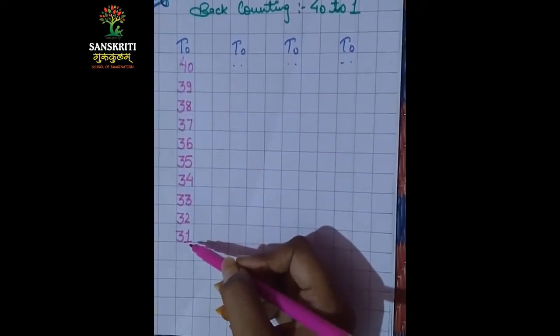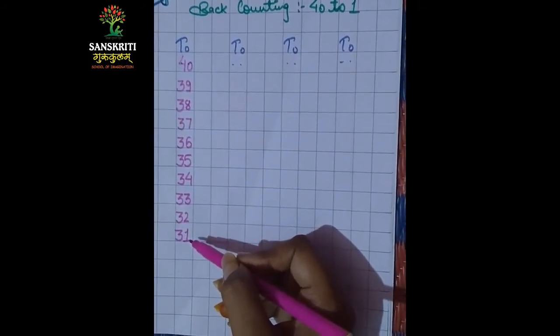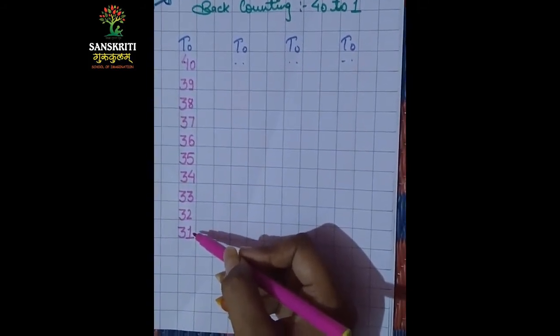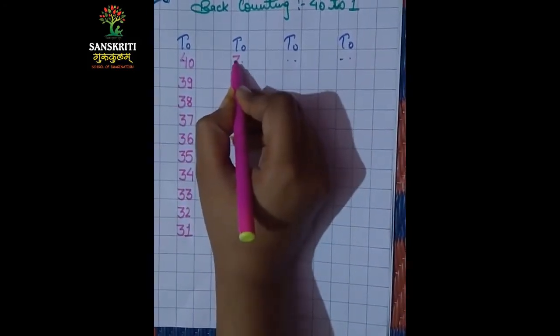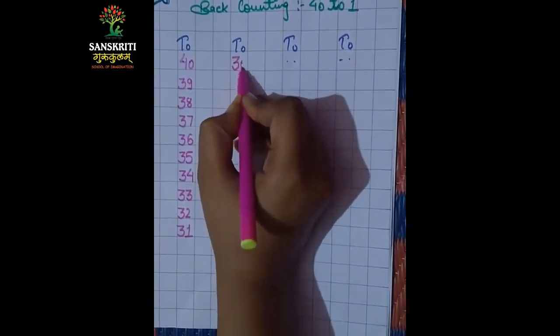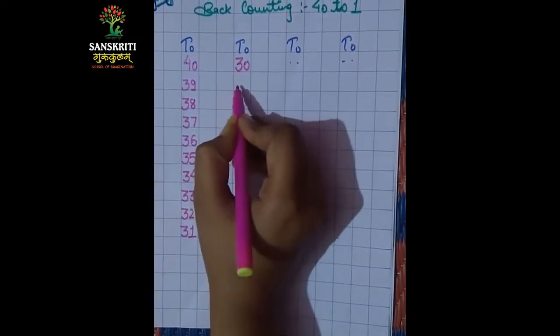31. Now we come to which line we are going to? 30. So now we are going to 30.